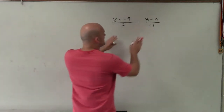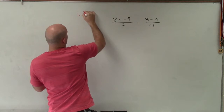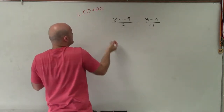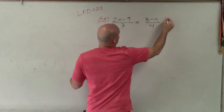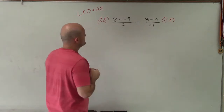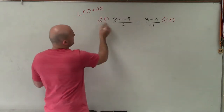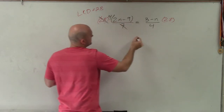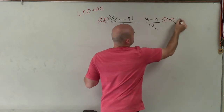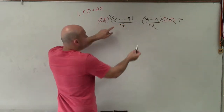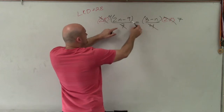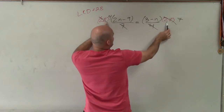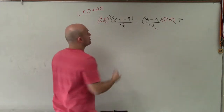Let me show you. If I want to clear the 7 and the 4, I can determine the least common denominator of 7 and 4, which is going to be 28. So if I simply multiply 28 times both sides, 28 divided by 7 leaves us with 4 times this product, and 28 divided by 4 leaves us with 7 times this product. Multiplying by the LCD produces the exact same result as applying the cross product.